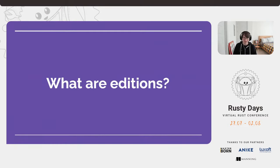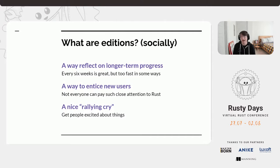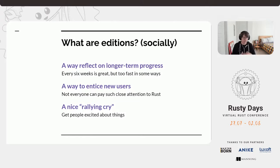First up: what even are editions? Even if you know the subject, there are details worth discussing. There are two aspects to editions that are really important. The first is the social aspect. An edition is a point in time where we say 'Rust is significantly different now than it was in the past.' Rust 1.0 came out in 2015, and Rust 2018 was the first edition release.